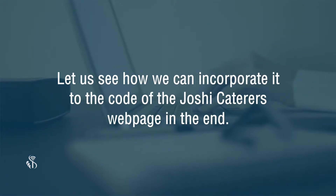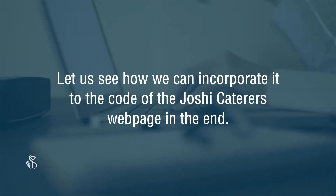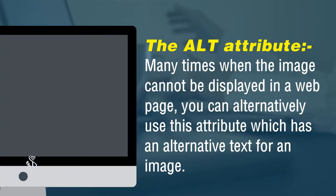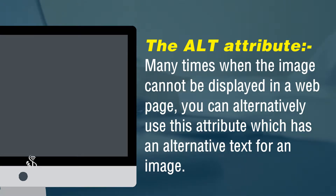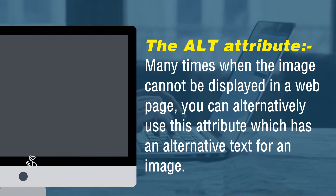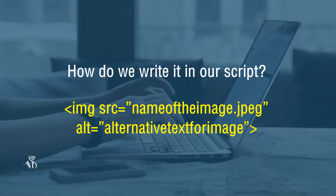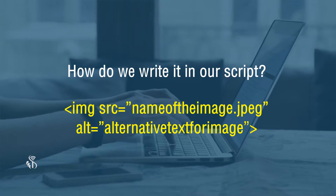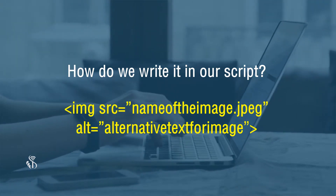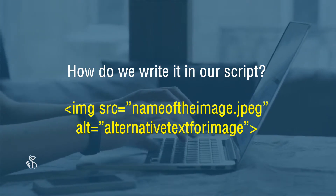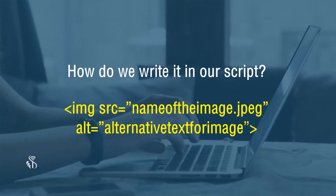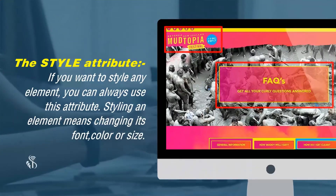Let us see how we can incorporate it into the code of the Joshi Caterer's webpage. The alt attribute: many times when an image cannot be displayed on a webpage, you can alternatively use this attribute, which provides alternative text for an image. The syntax is: img src="name_of_image.jpeg" alt="alternative text for image".